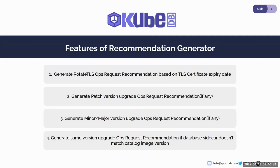If two possible major or minor upgrade versions exist, the recommendation will choose the minimum possible upgrade version for your DB resource. Additionally, if the Recommendation Generator finds that a DB pod is using an outdated image — meaning the DB resource sidecar does not match the catalog image version — it will generate a same-version ops request so that after executing it, your DB resource will use the latest catalog image.